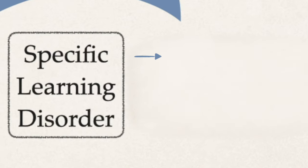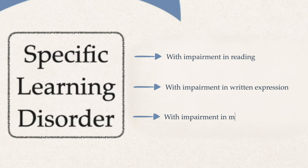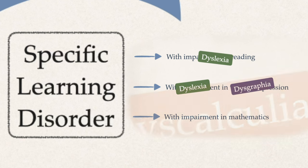If we zoom in even further, we see that specific learning disorder is divided into three categories. The first would be a specific learning disorder with impairment in reading. The second would be with impairment in written expression. And the last one is with impairment in mathematics. These different categories are basically the same as somebody telling you you have dyslexia, dysgraphia, or dyscalculia.